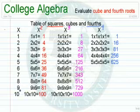Here the x values go from 1 to 10. For x squared: 1 times 1 is 1, down to 10 times 10 is 100.